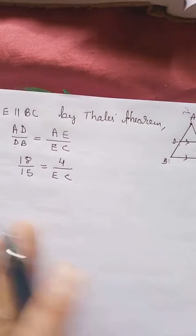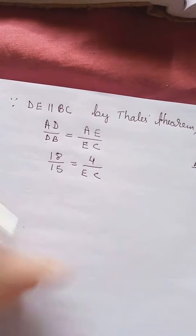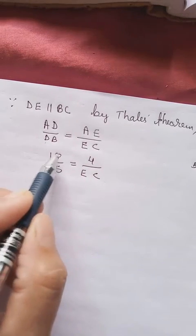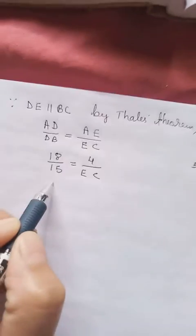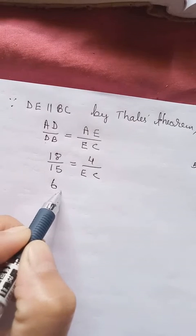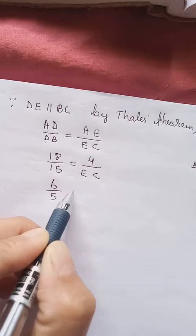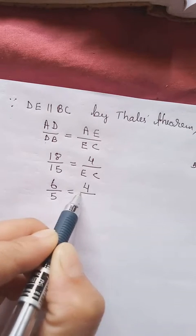Now our aim is to get EC. So what to do? We cross multiply. Here I think we can cancel with 3. 3, 6, 18. 3 into 5, 15 equal to 4 by EC.